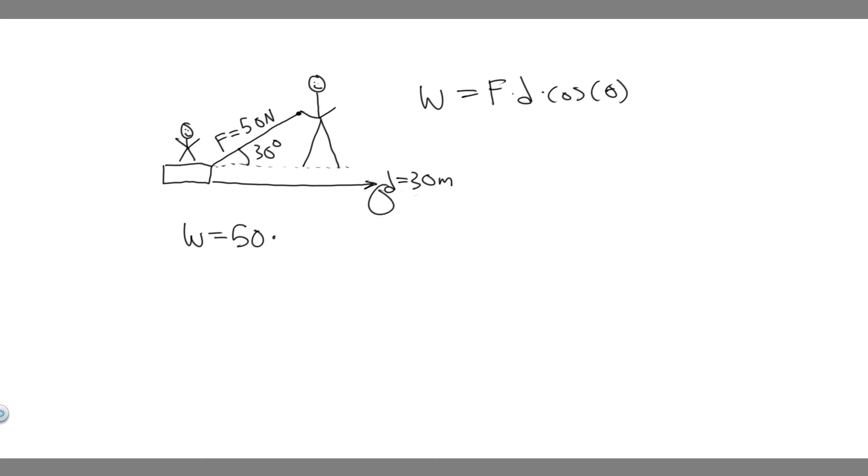D is the distance that he's going to pull her. In this case, we know he's going to pull a distance of 30 meters, so d is just 30. Then we have cosine of theta.